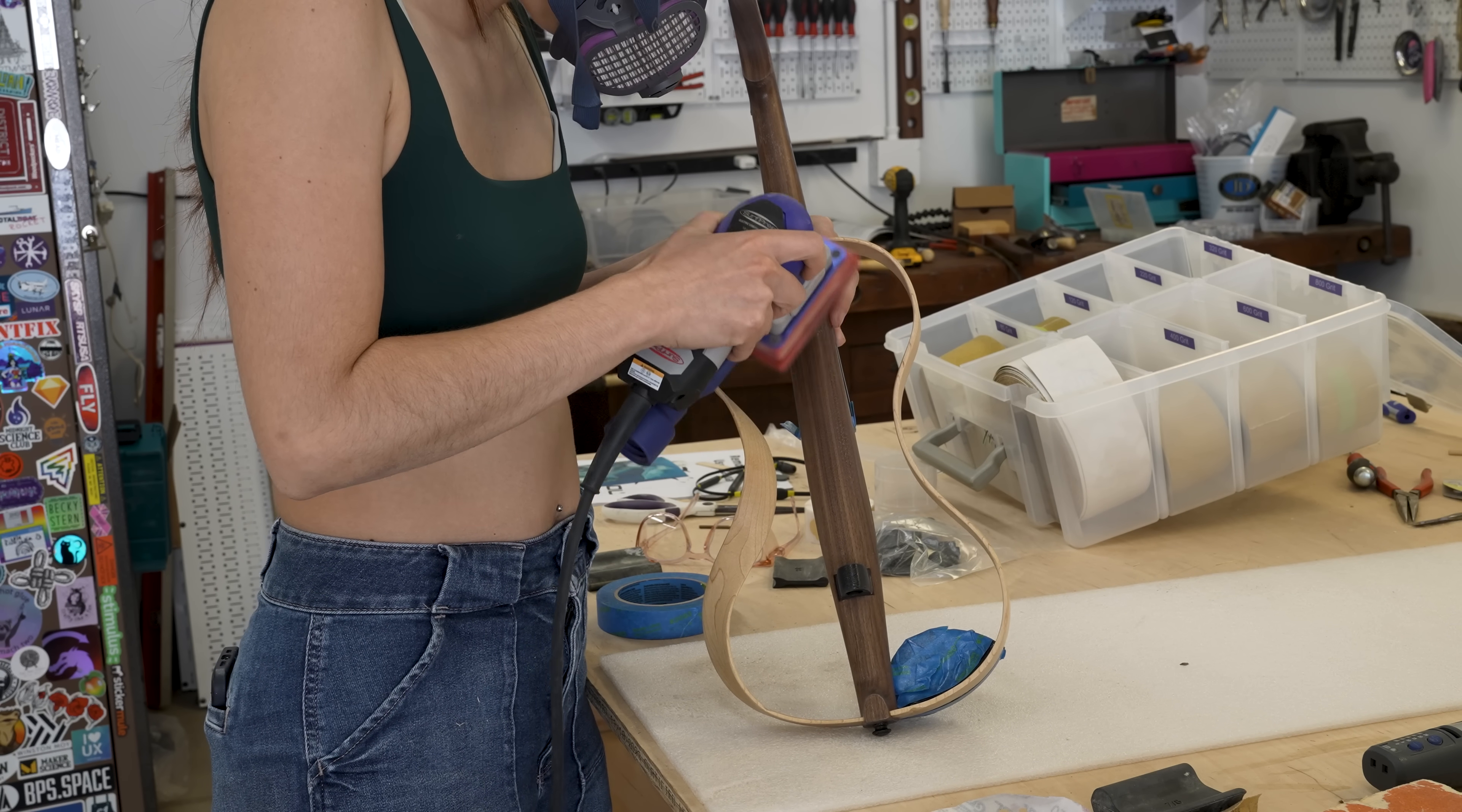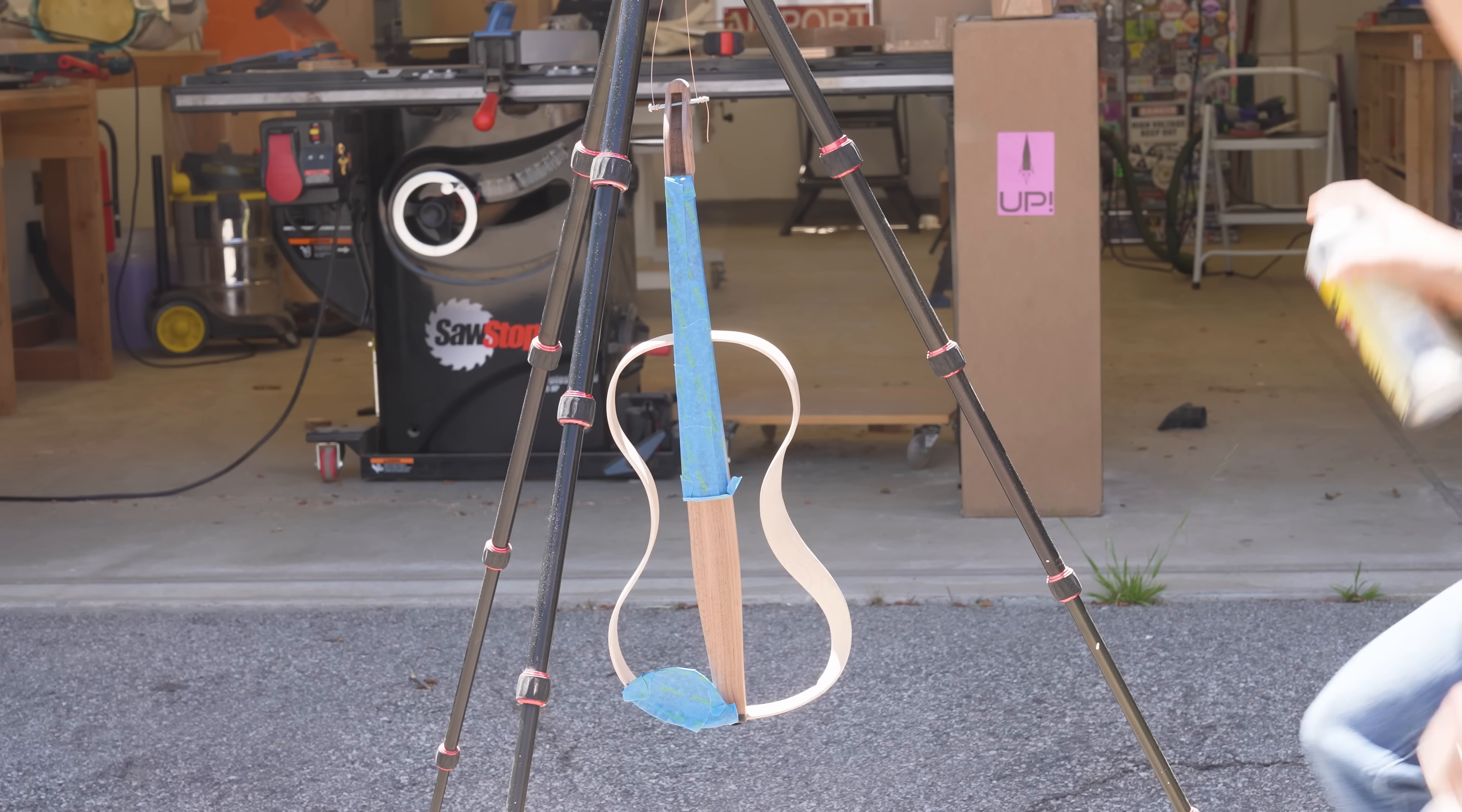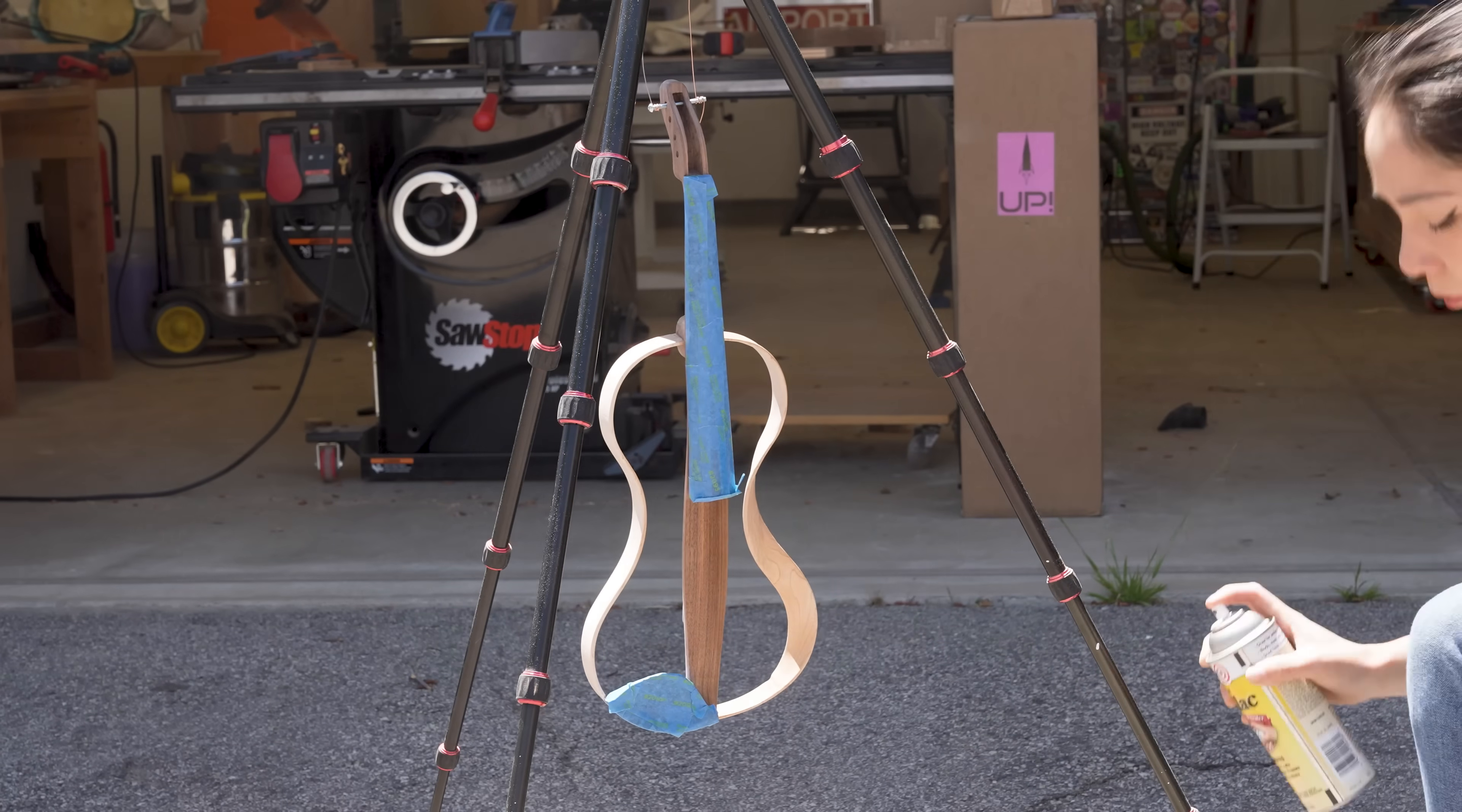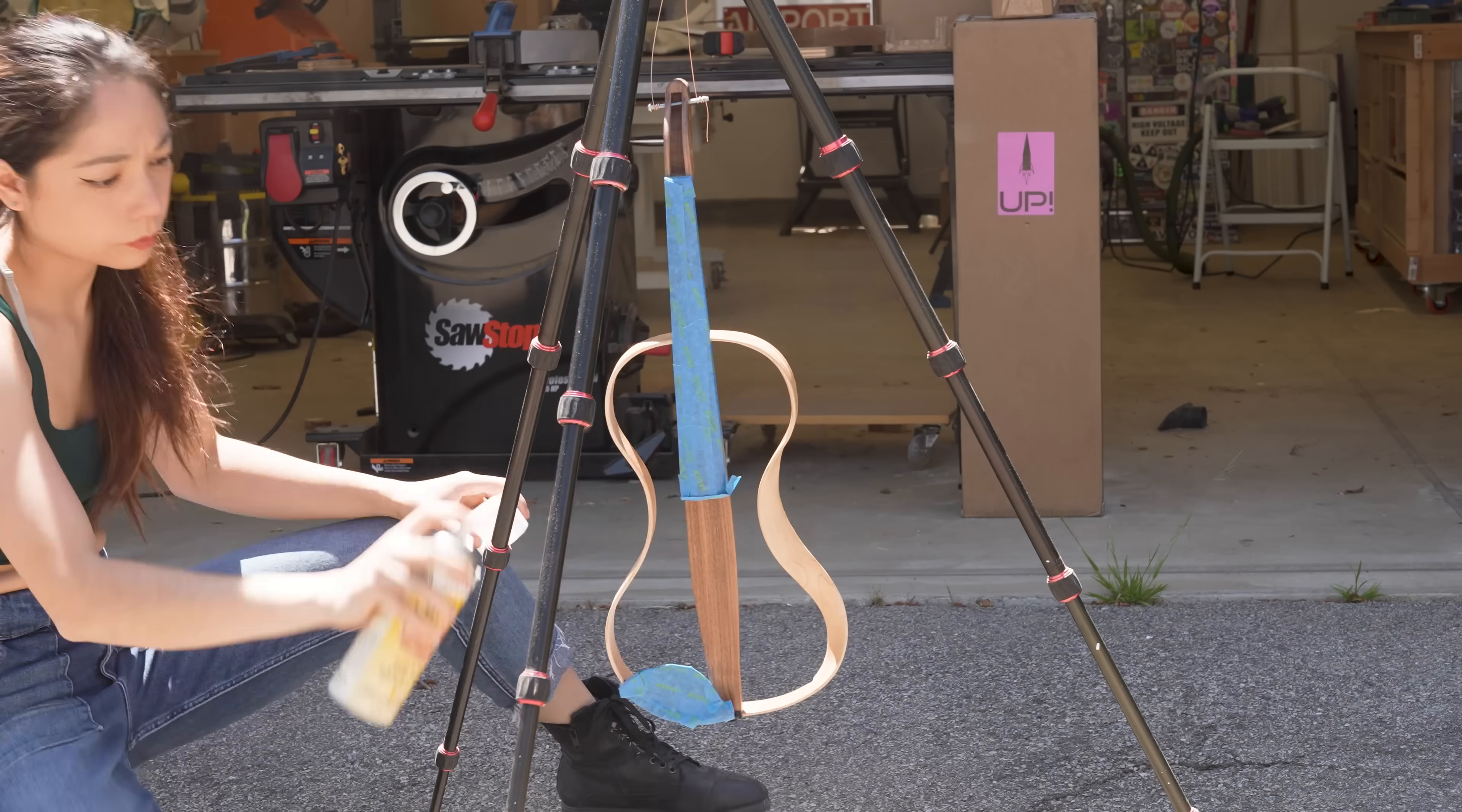With instruments, I've really taken a liking to spray on shellac, and a luthier friend of mine suggested it, and it's just so easy to use, and it requires no sanding between coats, although I do tend to sand with a really high grit right before my last coat, just to give it a really beautiful shine.